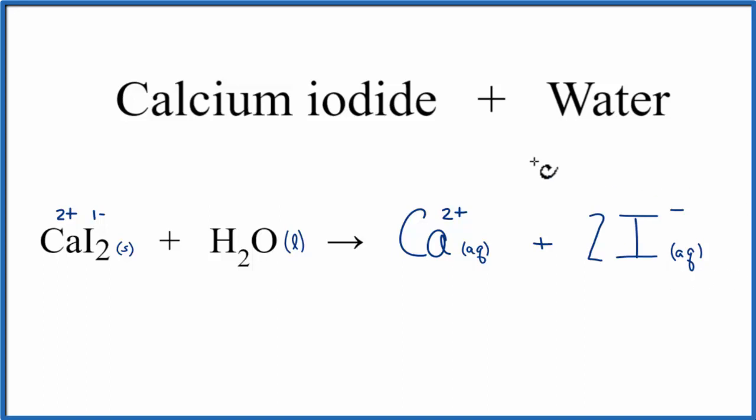Because of that, we don't need to write H2O on this side of the equation. That makes this the equation for calcium iodide plus water, CaI2 plus H2O.